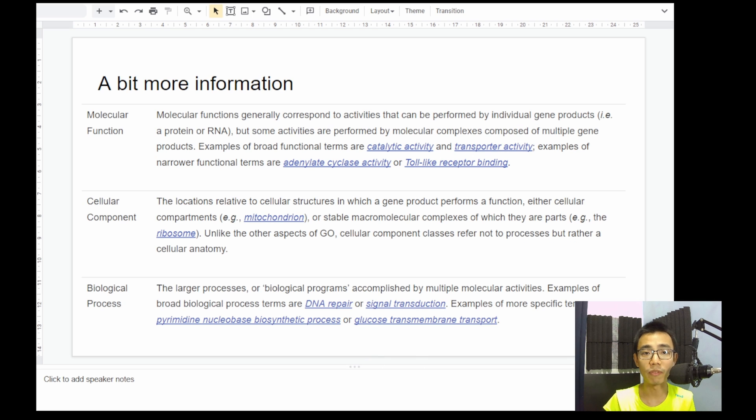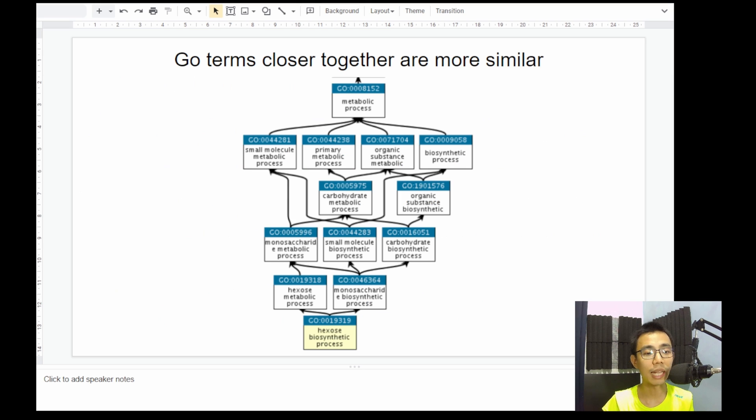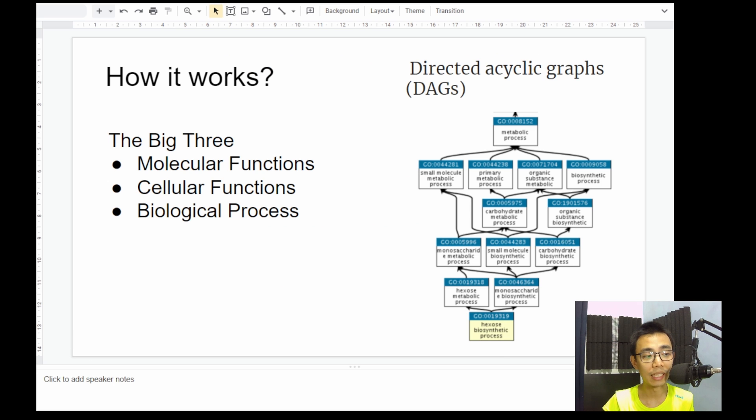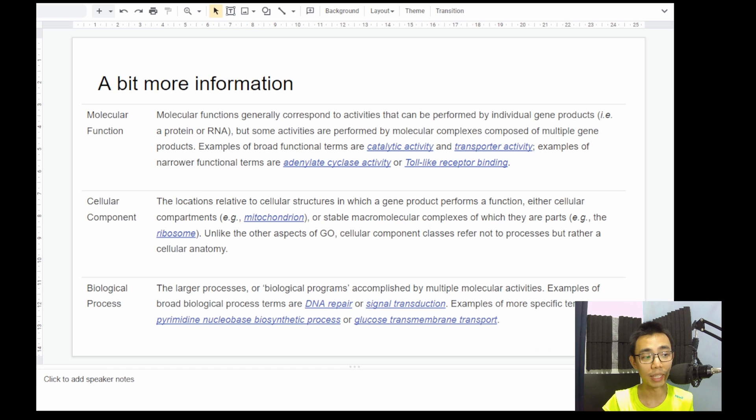Okay, so a little bit more information about the three different functions and the three different subgroups in the GO ontology, specifically the molecular function, sometimes called the MF, the cellular component, sometimes called the CC, and biological process, sometimes called the BP. I'm going to leave the slide in the video description down below, so if you want to have more time to read through them, you can. And I'll also add all the relevant information inside the slide under the speaker notes, as you can see right here.